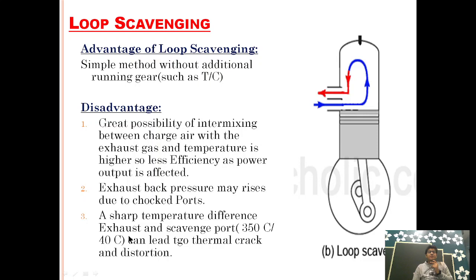A sharp temperature difference between the exhaust and scavenge port can lead to thermal cracking and distortion. The temperature of the scavenge air is around 35 to 50 degrees Celsius, but the temperature of the exhaust port is around 250 to 350 degrees Celsius. As both are situated in the same area of the liner, this large temperature gradient difference in such a small area can lead to thermal distortion and development of thermal cracks.